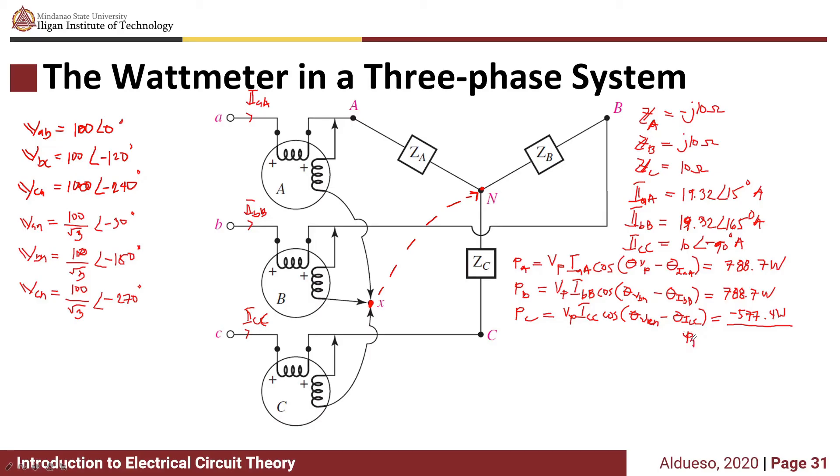The total power is 1 kilowatt, which is correct because we only have ZC as our resistive load.